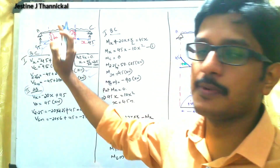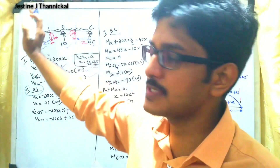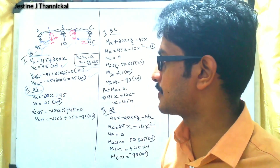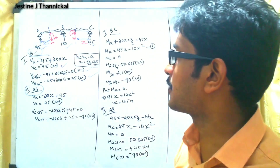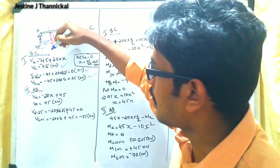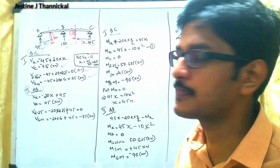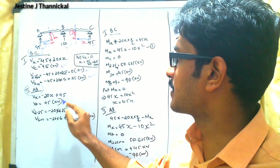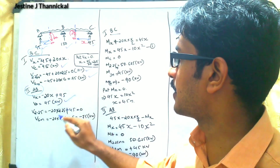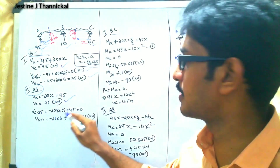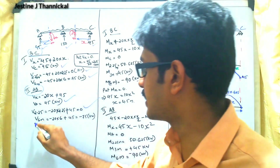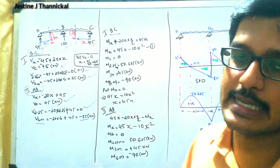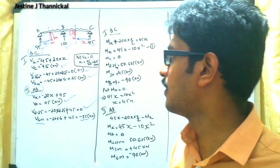For section AB, taking a section from joint A: Vx = −20x + 45. At x = 0 (point A), Va = +45 kN. At x = 2.25 m, Vx = 0. At x = 6 m (point B), Vx = −75 kN. The positive and negative signs interchange between the two sections.